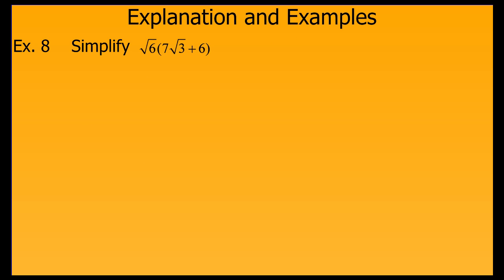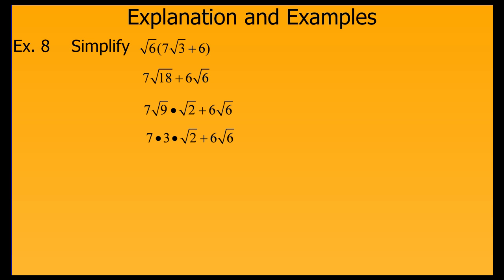Now let's try a distributive property problem. We distribute just like normal. So we get root 6 times 7 root 3 and then root 6 times 6. We use our product property to combine root 6 times root 3 to get root 18, giving us 7 root 18 plus 6 root 6. But we should notice that we can simplify root 18 by breaking it down into root 9 times root 2. Since the square root of 9 is 3, we can break that out, and we end up with 21 root 2 plus 6 root 6. This is as simplified as we can get it.